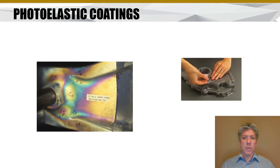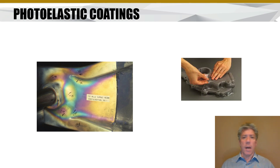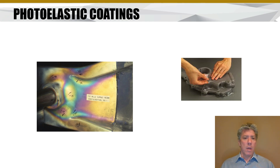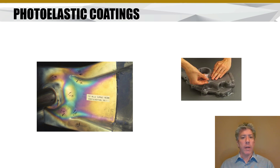Photoelastic coatings applied to parts are really interesting — you look at them with polarized lenses to see what's going on. These coatings can be shrunk onto or pasted onto materials, and you look for areas of very large stress when the machine is in operation. For complicated parts where you can't easily calculate stress analytically, photoelastic coatings are a fairly inexpensive and hands-on visual way to identify highly stressed regions for testing or redesign.